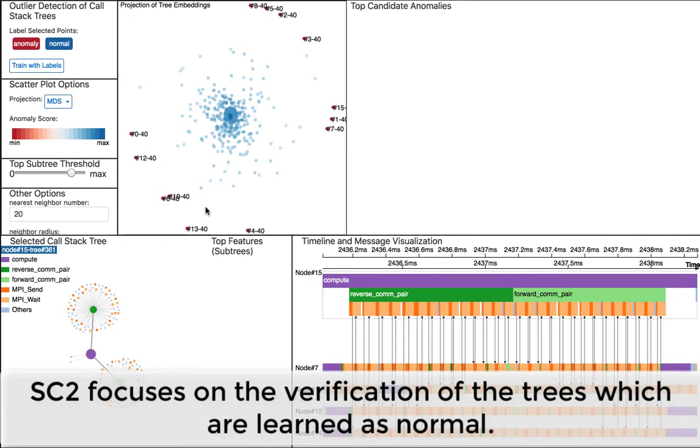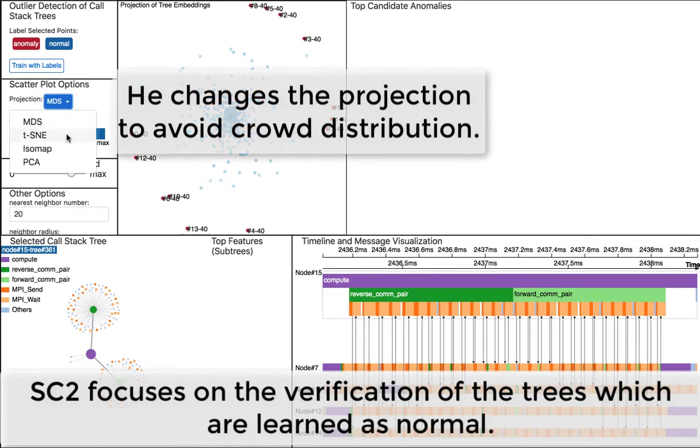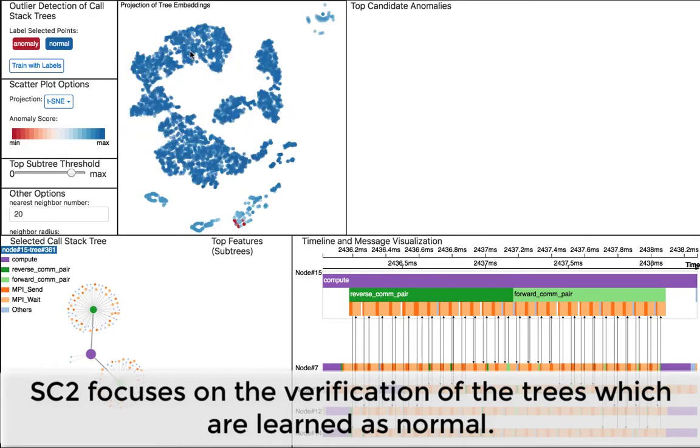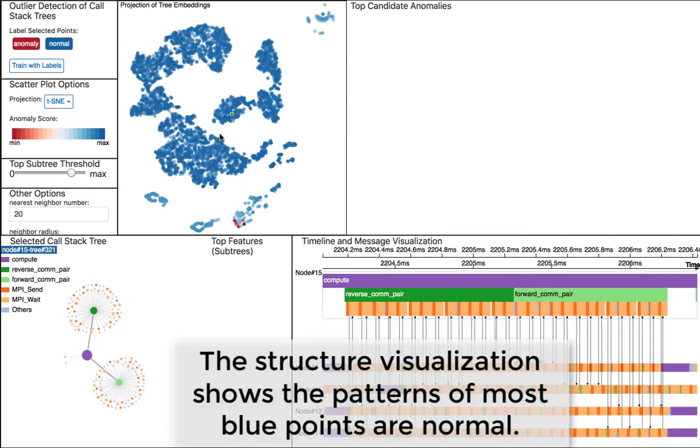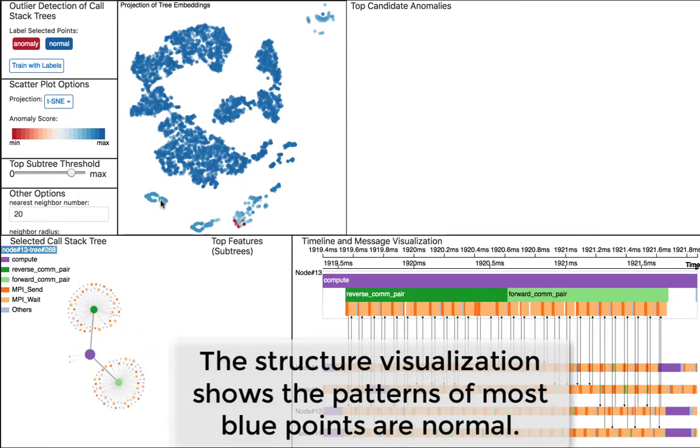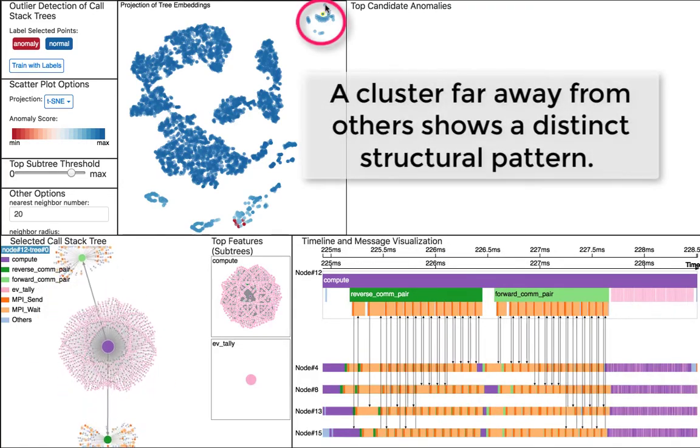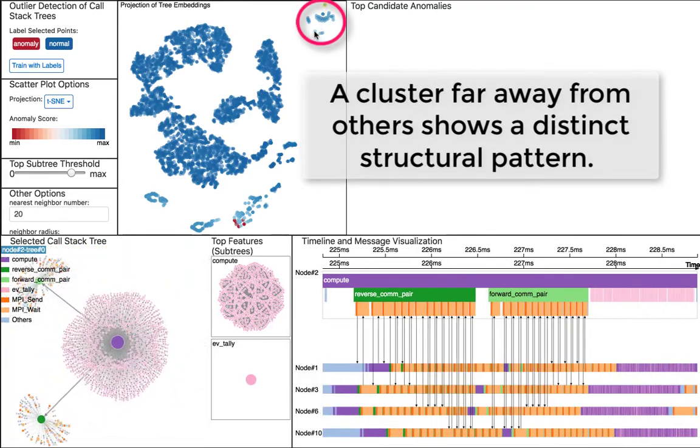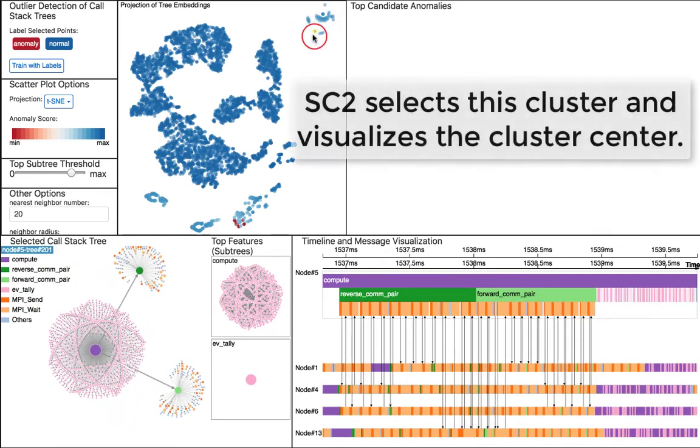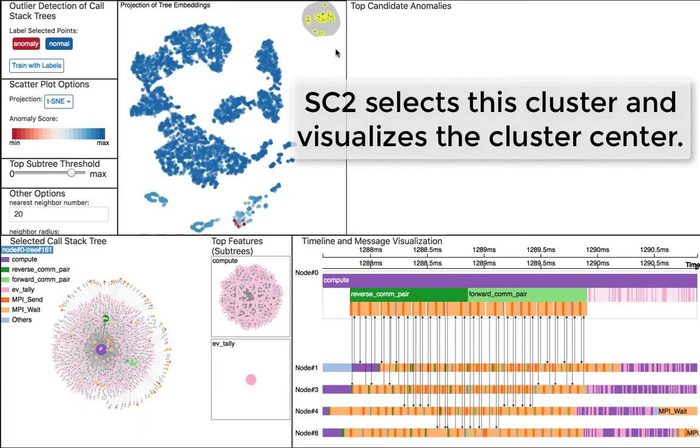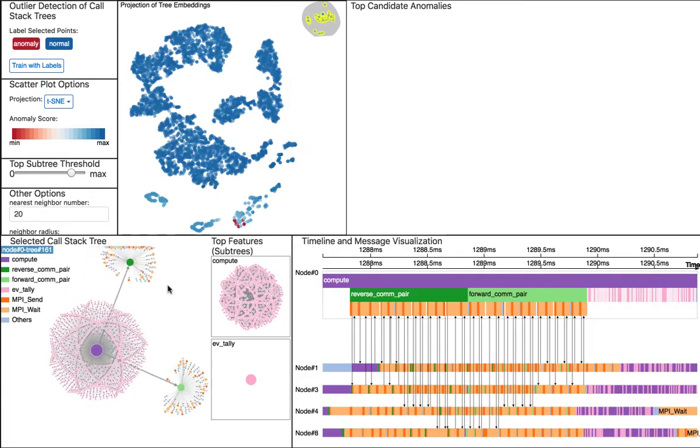In the second study, SC2 has a special interest in verifying and understanding the patterns of the call stack trees which are learned as normal. He explores the structural pattern distribution by selecting trees in different locations in the scatter plot. He examines the points in a cluster and notices there are different structural patterns. He selects the cluster by a lasso tool. The center of the selection is visualized in the bottom two views.